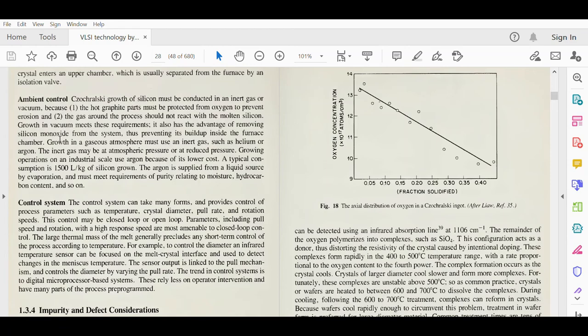Growing operations on an industrial scale use argon because of its lower cost. A typical consumption is 1500 liters per kg of silicon grown. The argon is supplied from a liquid source by evaporation and must meet requirements of purity relating to moisture and hydrocarbon content.